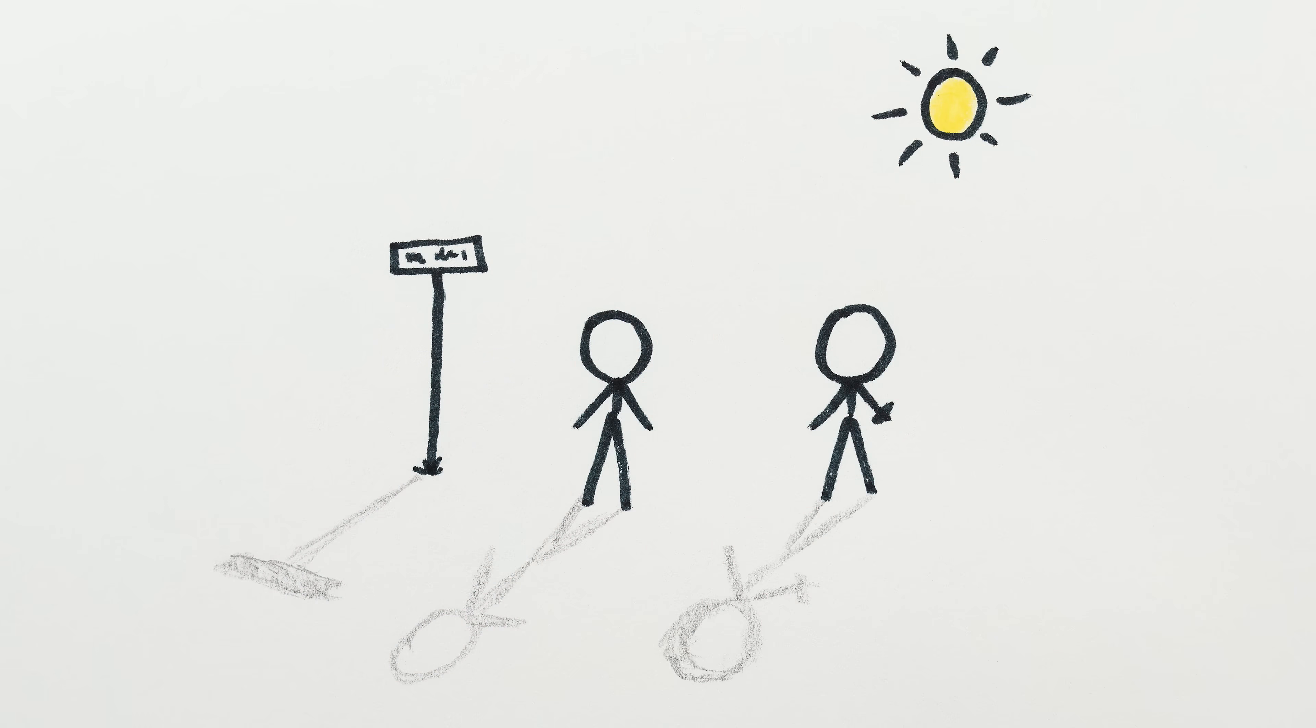A friend recently sent me a video where the shadow of a post seemed to grow outwards towards them when their shadow got close to that of the post. Their question for me? What's going on?